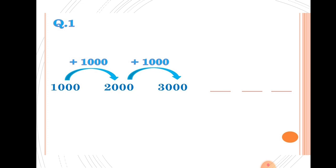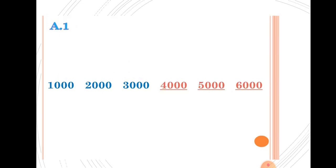The last number is 3000. Add the difference: 3000 plus 1000 equals 4000. Then 4000 plus 1000 equals 5000. Then 5000 plus 1000 equals 6000.